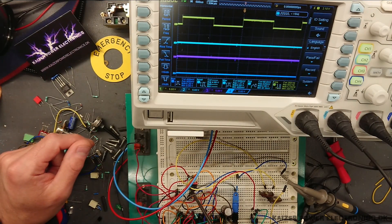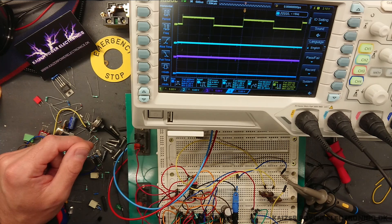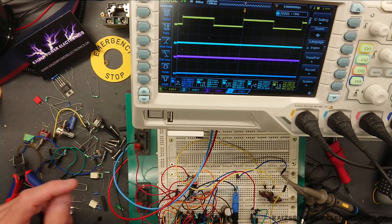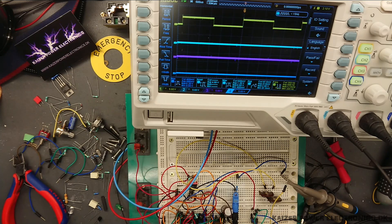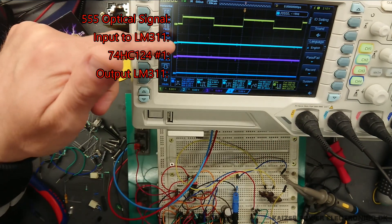We have the 555 timer sitting here. We have our optical link, transmitter and receiver, and then we have all the logic ICs sitting over here. Let's try to turn the potentiometer of the 555 timer in order to show that we have a working band pass filter. Right now, we are at 360 Hz.